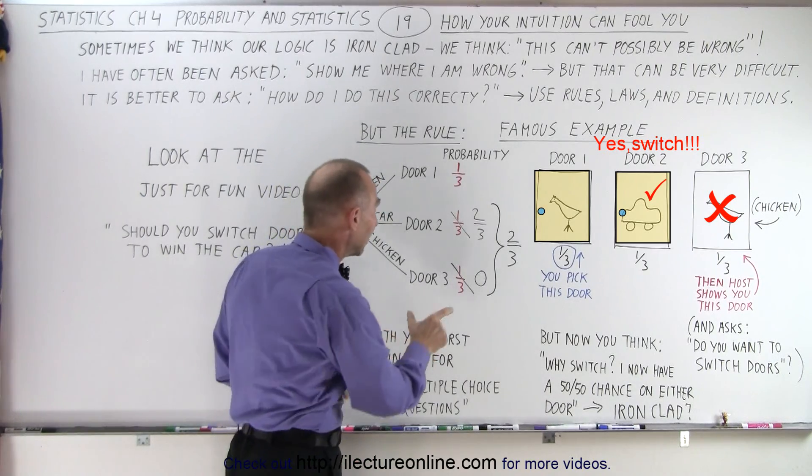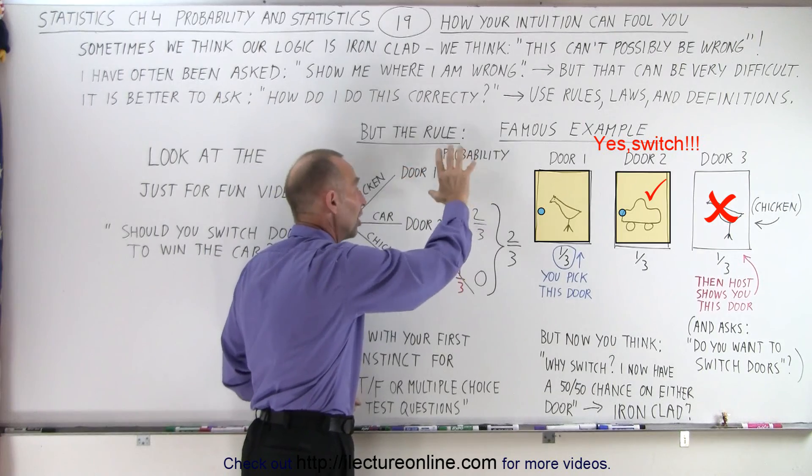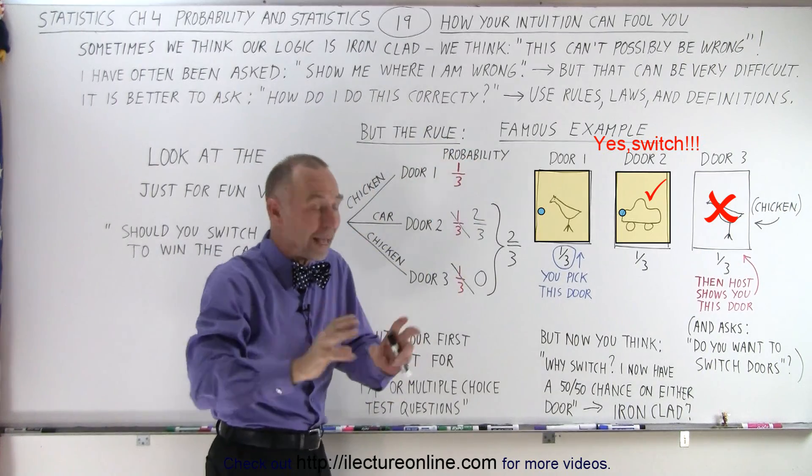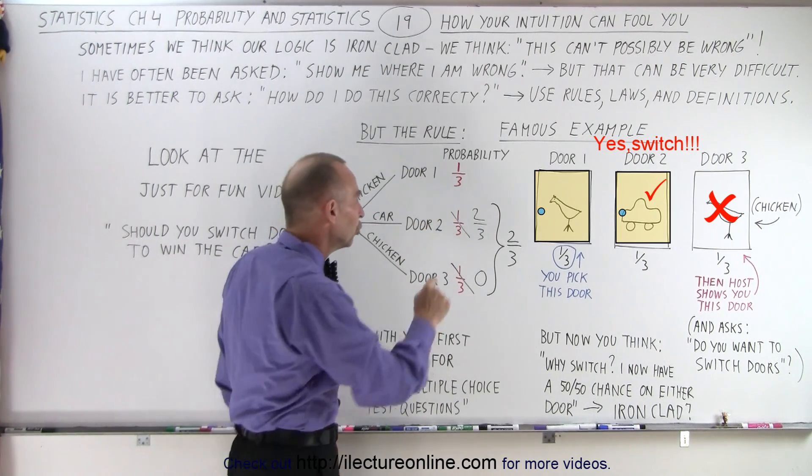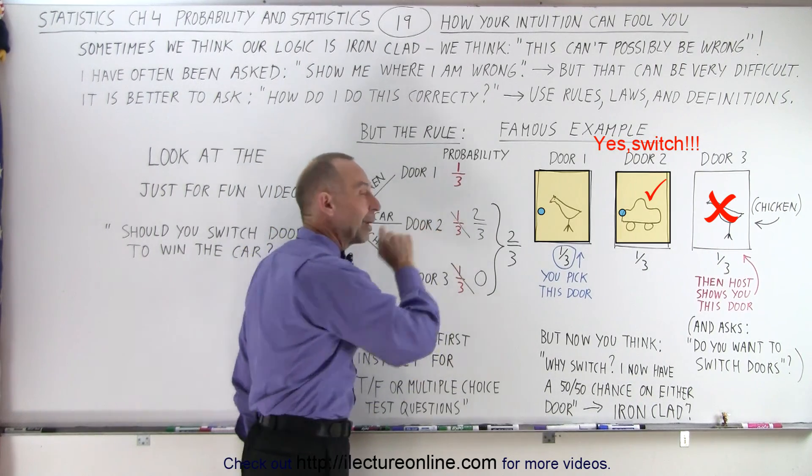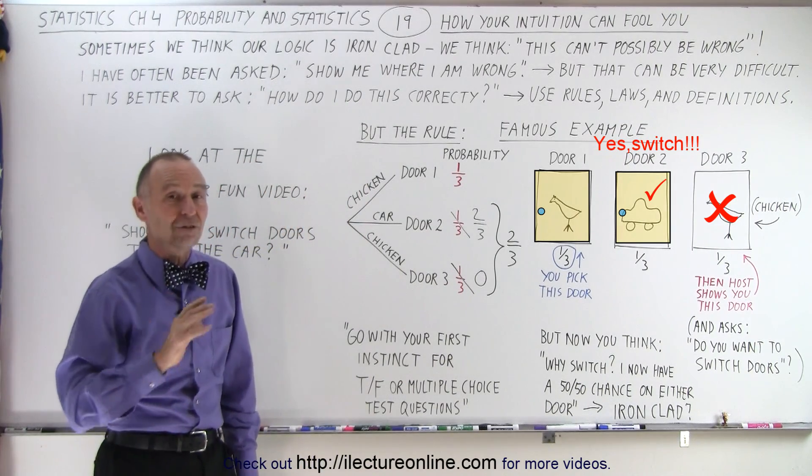In other words, now that I know it's not behind this door and the probability for this door doesn't change, it's still one-third. It doesn't matter if I open one of the other doors or not, it's still a one-third probability. That now means there's a two-thirds probability that the prize is behind that door. And as strange as it seems, it actually works.